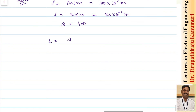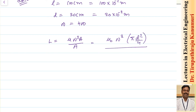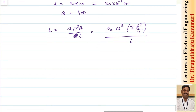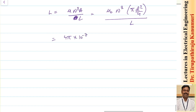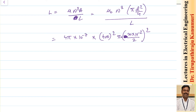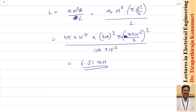The inductance L equals mu-naught times N-squared times A divided by length, where mu-r equals 1 for air and A equals pi times r-squared or pi d-squared over 4. Substituting: L equals 4pi times 10 to the power of minus 7, times 400 squared, times pi times (0.20/2) squared, divided by 100 times 10 to the power of minus 2. This gives L equal to 6.31 millihenry.